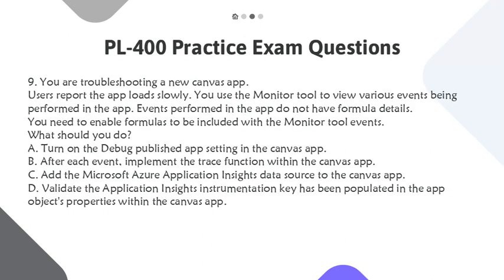Question 9. You are troubleshooting a new Canvas app. Users report the app loads slowly. You use the Monitor tool to view various events being performed in the app. Events performed in the app do not have formula details. You need to enable formulas to be included with the Monitor tool events. What should you do?